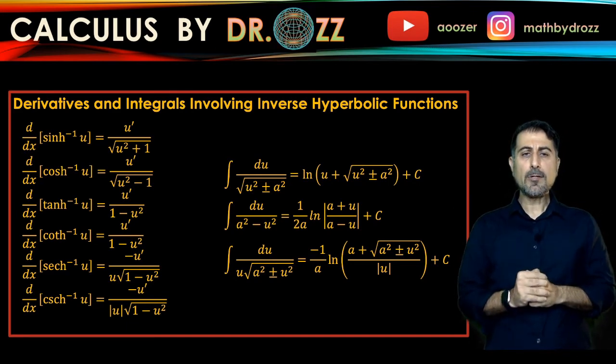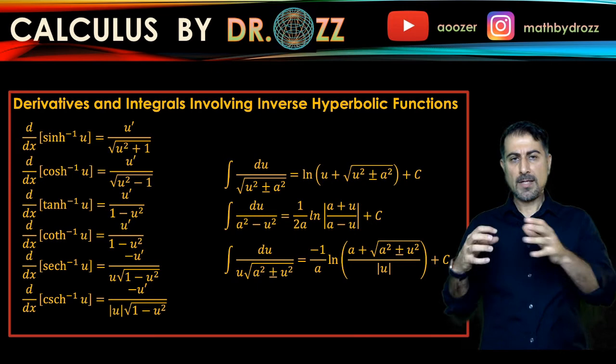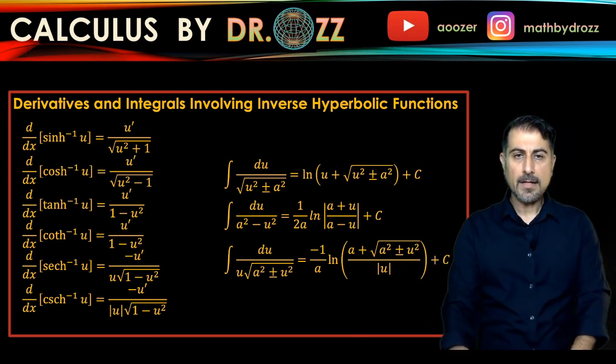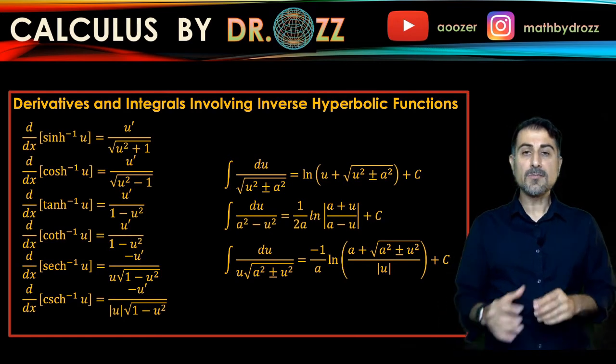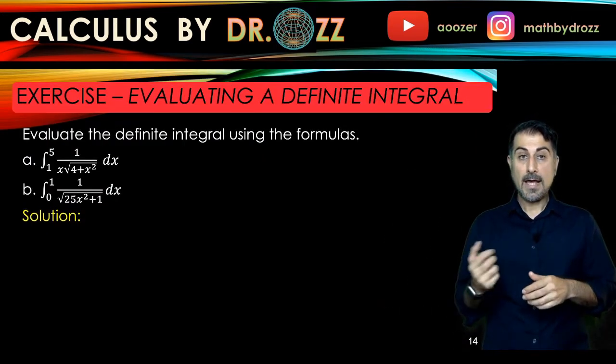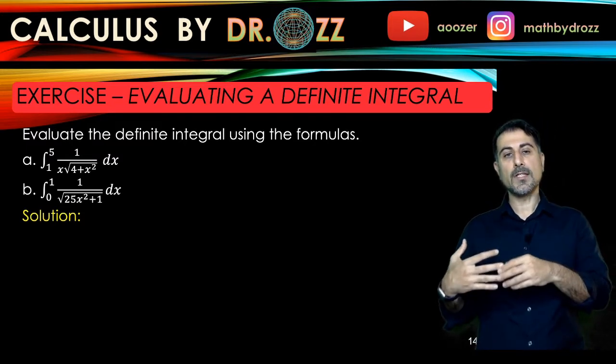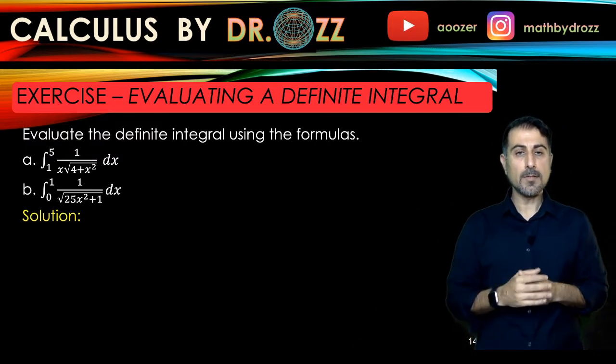And also, I want to remind you that we have indefinite integrals and definite integrals. And in indefinite integrals, we generally find the anti-derivative of the integrals. And when we convert that to a definite integral, then we're having limits, upper and lower limits.